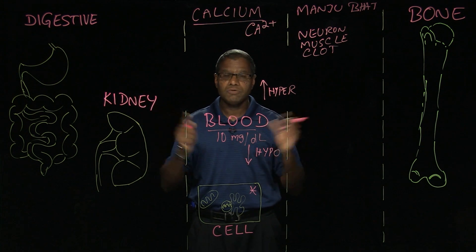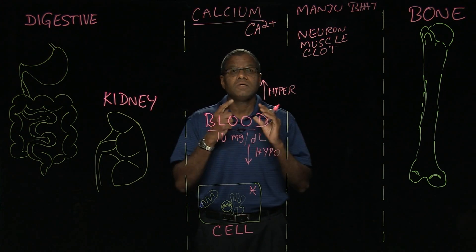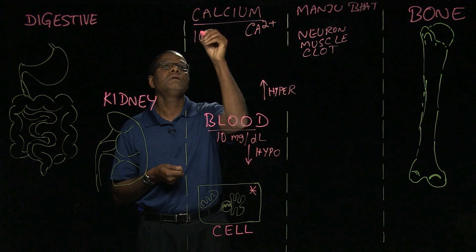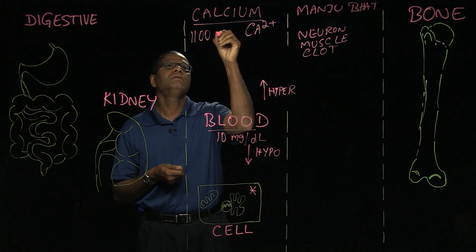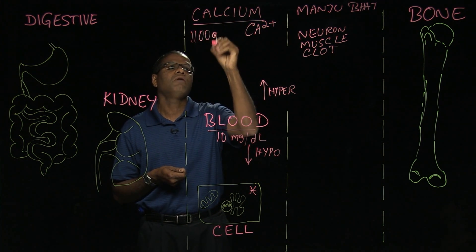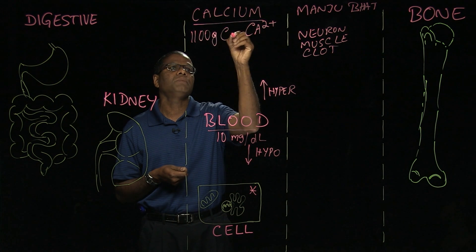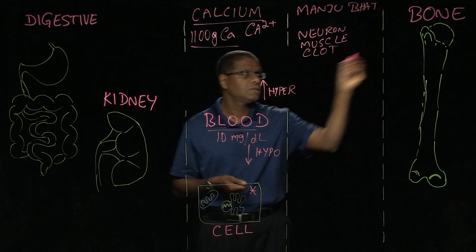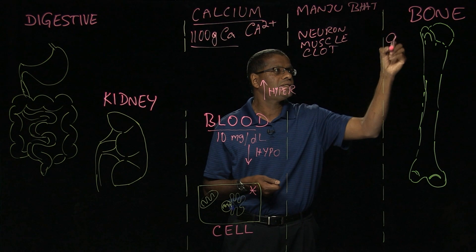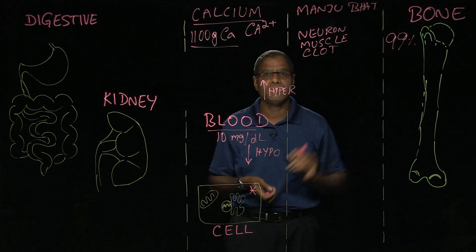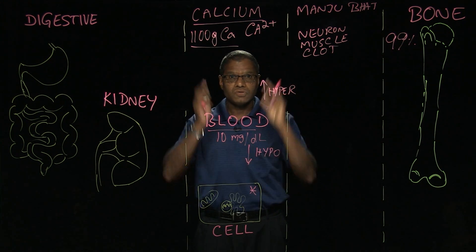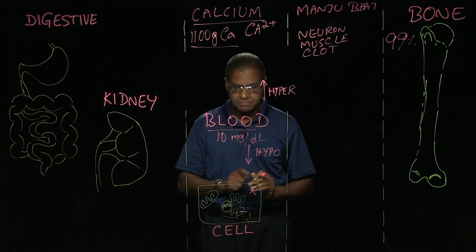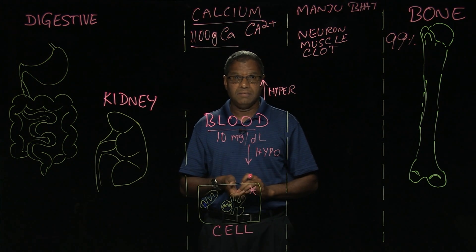So how do we achieve this? Normally we have a total of about 1100 milligrams of calcium in the body, of which about 99 percent is stored in the bone. So less than 1 percent is distributed between the blood and the cell.